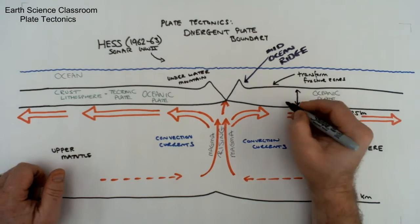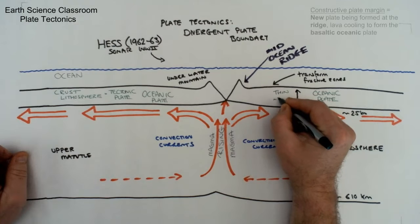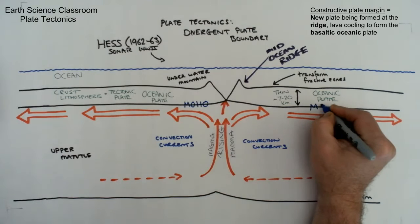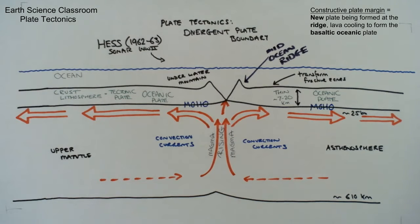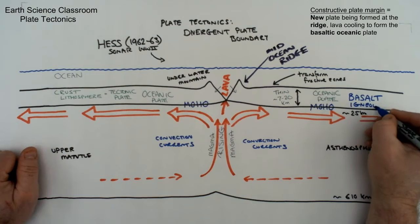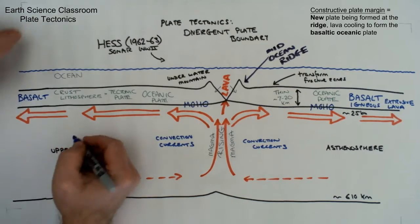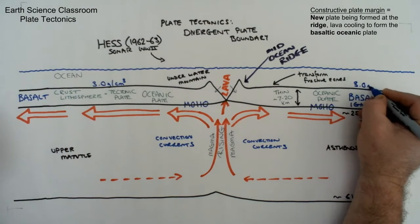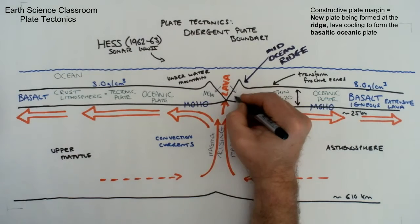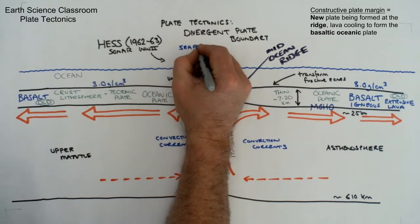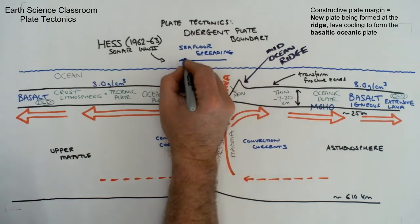This is where the ocean crust — the oceanic plate — was being formed and constructed, with new lava forming basalt that was very young at the ridge. As you went further away from the ridge, it got older. This was the key to figuring out that the ocean floors were moving, which was seafloor spreading theory. That helped create the plate tectonic theory of the whole system, from the divergent plate boundary to the transform boundary, to eventually the plate being destroyed at a convergent plate boundary through subduction or mountain building.